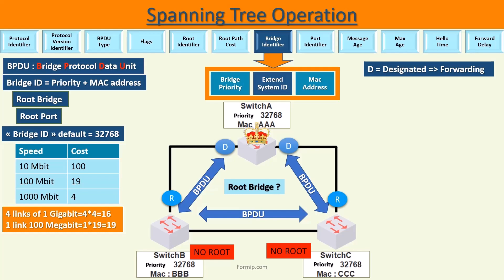It is also possible to modify the different costs of the connections. From that moment on, spanning tree has determined the root bridge and the root port of the other switches, which corresponds to the shortest path. But we still have a loop, so it is necessary to close one of the ports between switch B and switch C to break this loop. Which port will spanning tree choose to cut — that of switch B or that of switch C?